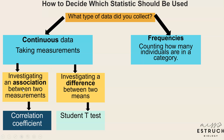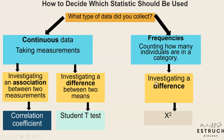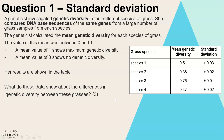If you're looking at an association then you'd be using a correlation coefficient statistic. If you're looking at a difference between two means it'd be the student t-test, and if it's frequencies investigating a difference between numbers of individuals in two or more categories that would be chi-squared. One type of question you could get is identifying which statistic to use and justifying your choice, so let's get to the exam questions.